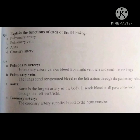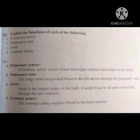Pulmonary artery: Pulmonary artery carries blood from the right ventricle and sends it to the lungs. Pulmonary artery right ventricle سے blood carry کرتی ہے اور اسے lungs میں بھیجتی ہے. Pulmonary vein: The lungs send oxygenated blood to the left atrium through the pulmonary vein. Lungs pulmonary vein کے ذریعے left atrium میں oxygenated blood send کرتے ہیں.